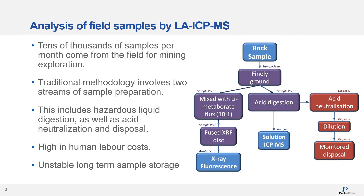Acid digestion requires some sort of hot block or other heated digestion system to accelerate the process. Following analysis, the sample must either be stored where it may not be stable, or disposed of, which includes neutralization with some sort of base and dilution for observed disposal. These treatment and energy costs can add up.